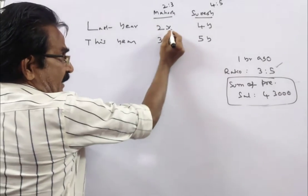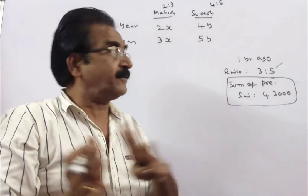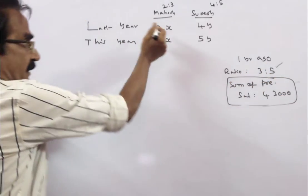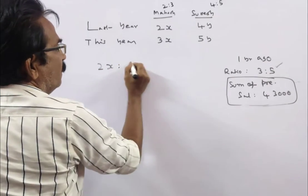One year ago means last year. Last year, the salaries of Mahesh and Suresh are in the ratio 3 is to 5. That means 2x is to 4y.